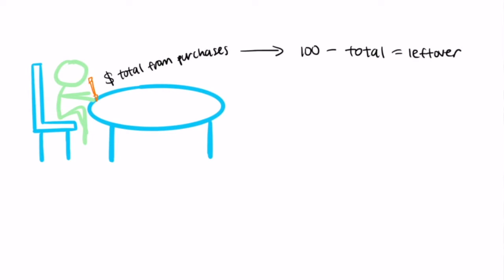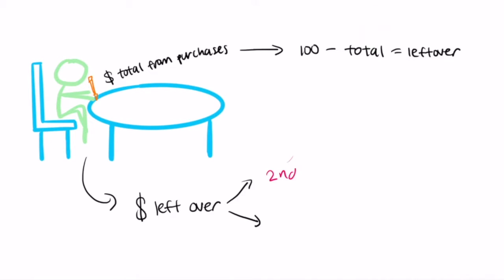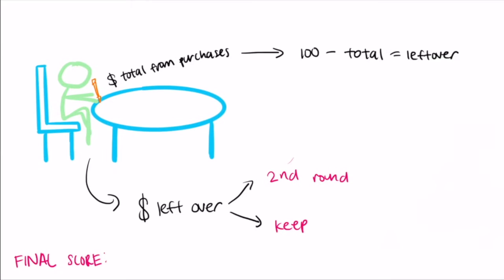Check your work! If you still have money left over, go around the room again for a second round of purchases. If you want to keep the remainder of your money and do not wish to purchase more items, that's okay too. Remember, your final score will be based on two factors: how useful your purchases are in the tsunami simulation and how much money you have spent or how much money you have remaining.